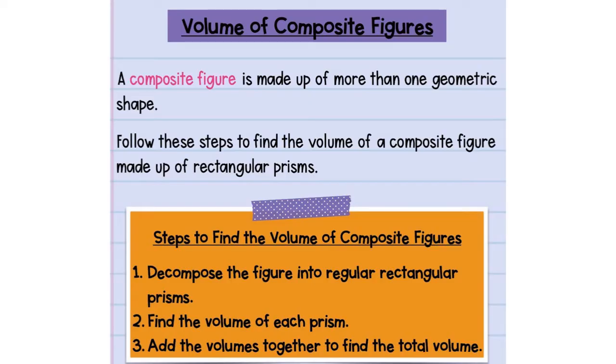We're going to follow these steps to find the volume of composite figures. We're going to decompose. So composite means to put together, so decompose means to take apart the figure into regular rectangular prisms. You're going to find the volume of each prism and then we're going to add the volumes back together. After we decompose them, we're going to compose them back together by adding them.